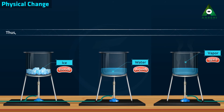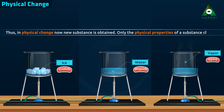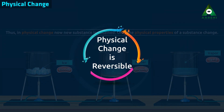Thus, in physical change, no new substance is obtained. Only the physical properties of the substance change. Physical change is reversible.